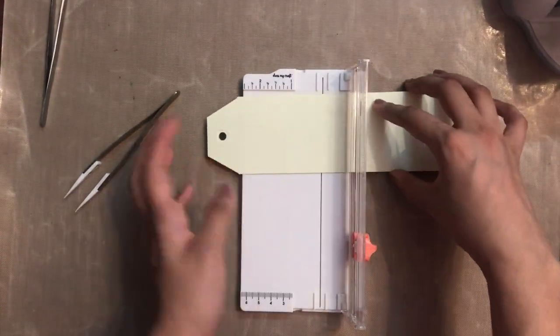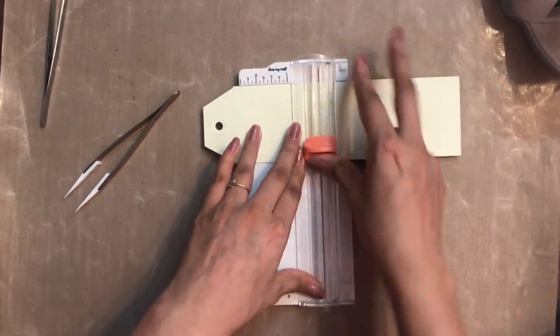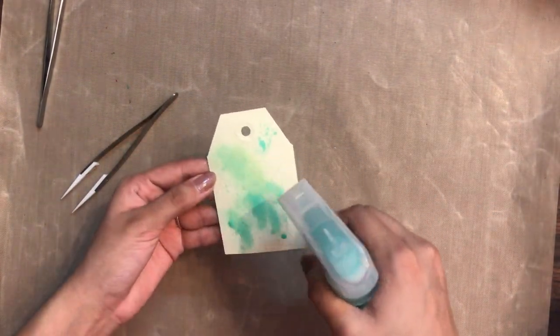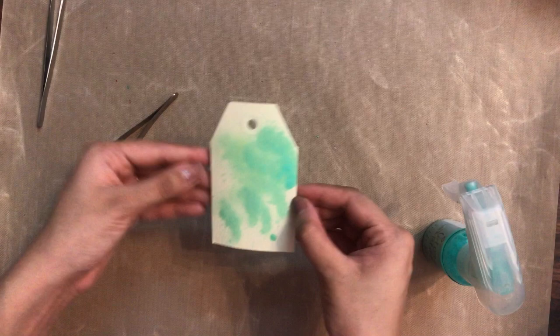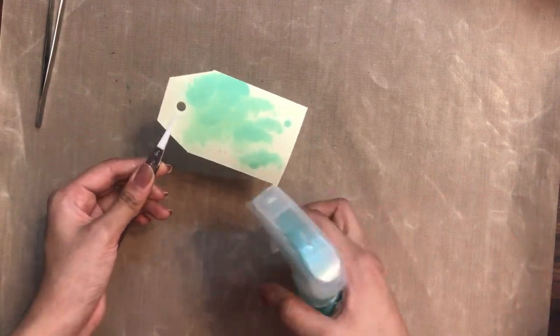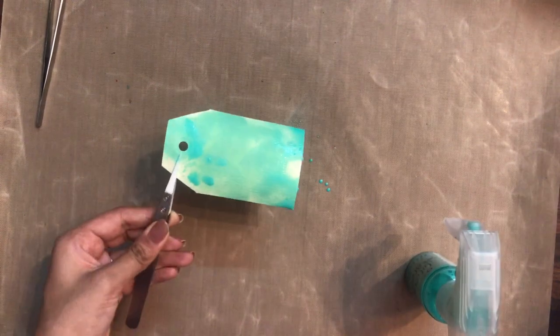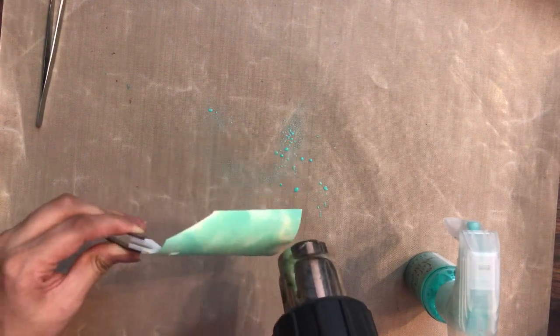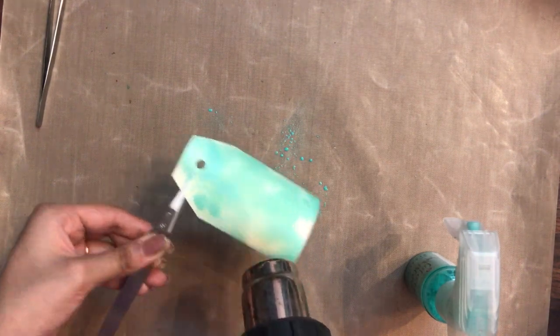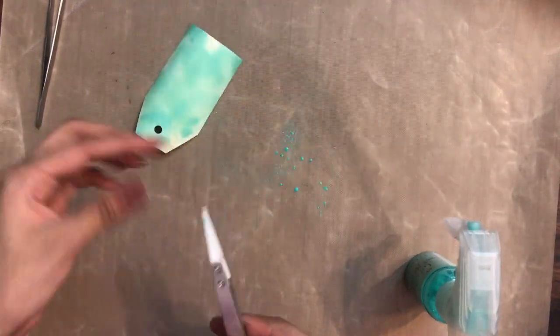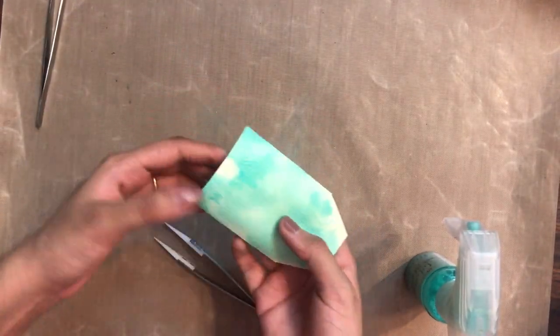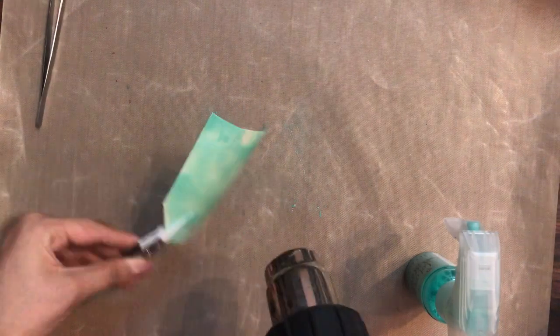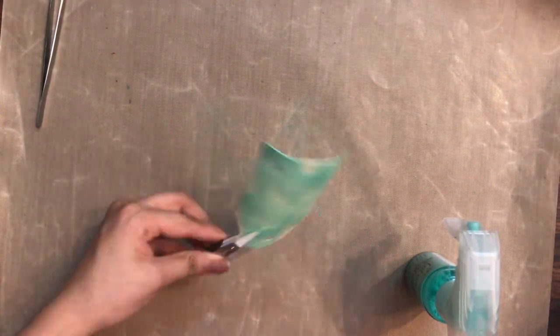Using the rectangular tag punch, I've already trimmed off the paper. Now using my mini trimmer, I've trimmed the paper as per my size. Now using a liquid spray, I'm just adding it. By holding the cardstock with the help of my tweezers, you can simply heat set it. It's a heat resistant tweezer, so the tweezers won't get heated up and my hands are safe.